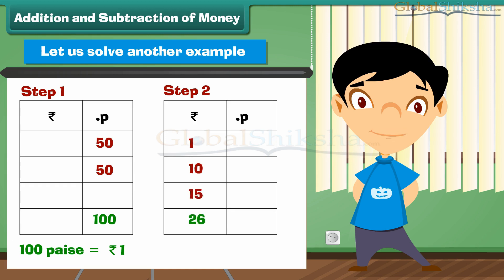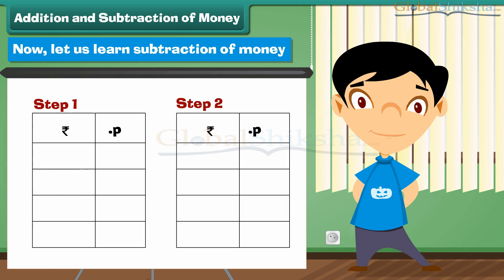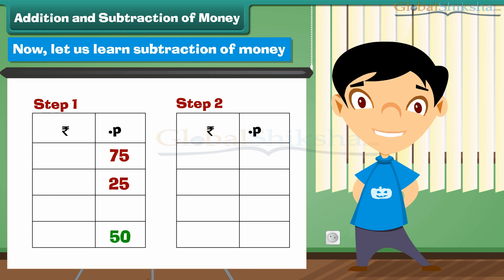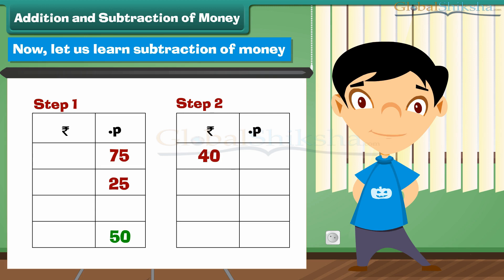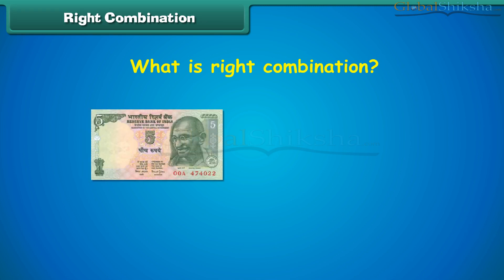Add the numbers in the rupees column: 1 plus 10 plus 15 equals rupees 26. Write 26 under the rupees column. Now let us learn subtraction of money. Subtract 10 rupees 50 paise from 40 rupees 75 paise. Step 1: Subtract in the paise column — 75 minus 25 equals 50 paise. Write 50 under paise column. Step 2: Subtract in the rupees column — 40 minus 10 equals 30. Write 30 under the rupees column.